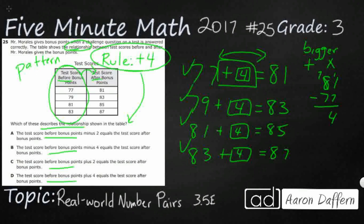So they're saying the test score before bonus points minus 2. They're saying the rule here is minus 2. So 77 minus 2 makes 81. No, that doesn't make any sense. Minus gets you a smaller number, not a bigger number.